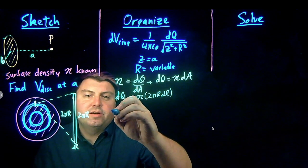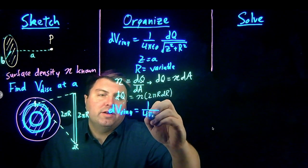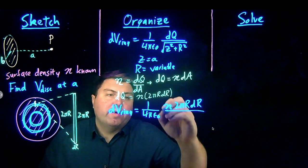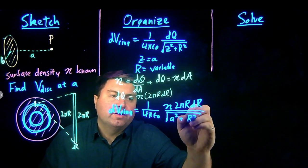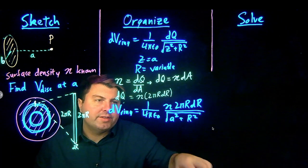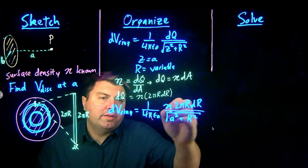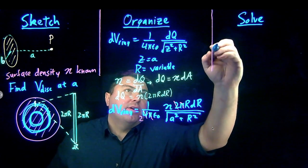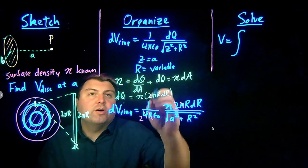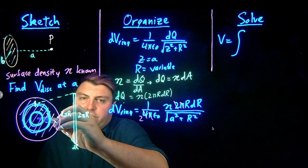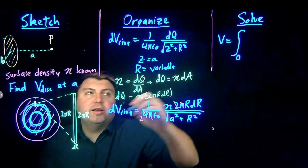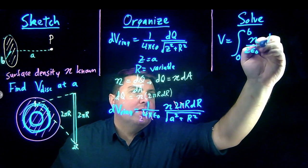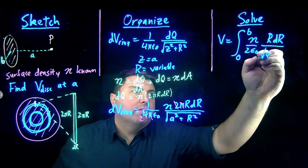Going back to dV for a ring and writing out everything: we have 1 over 4π ε₀, our dq is eta times 2πr dr, and our z squared plus r squared becomes a squared plus r squared. We can do a bit of canceling: pi cancels with pi, and 2 over 4 becomes one half. Then we figure out the limits of integration: r is our variable, the smallest r is a ring with radius 0, and the largest is a ring with radius b. So we have eta over 2ε₀ times the integral from 0 to b of r dr over the square root of a squared plus r squared.